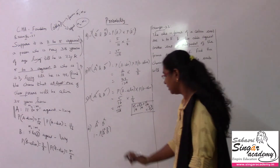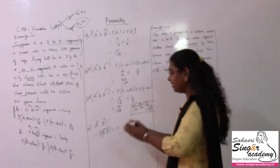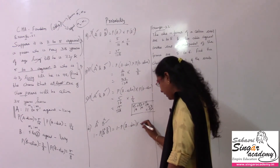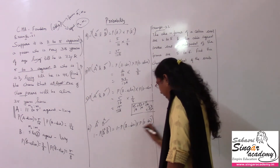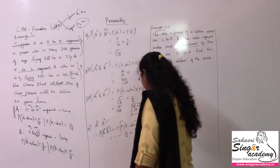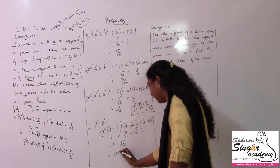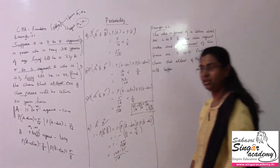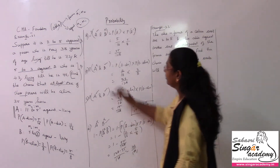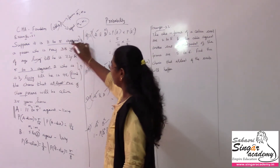Let me verify using the complementary method: 1 minus P(both not alive). P(A died) = 11/16 and P(B died) = 5/8, so P(both died) = 55/128. Therefore 1 − 55/128 = 73/128. Yes, it matches! So the answer for problem 1 with odds 11 to 5 against and 5 to 3 against is 73/128.